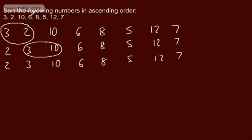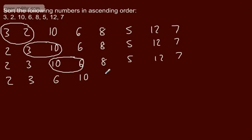If we have n items in our data set, we need to carry out n minus 1 passes to ensure they're in order. We will do n minus 1, but we will actually do n passes, as the final pass will be exactly the same as the one before. So: 10 and 6 — are we swapping those? Yes. The new list is: 2, 3, 6, 10, 8, 5, 12, and 7.